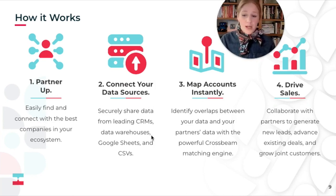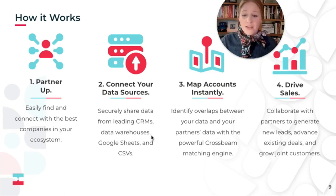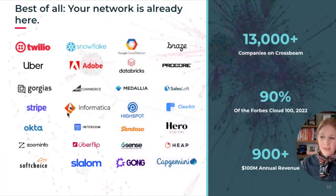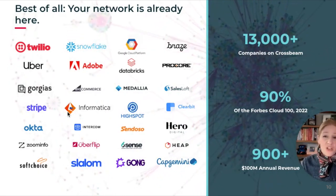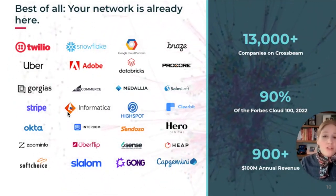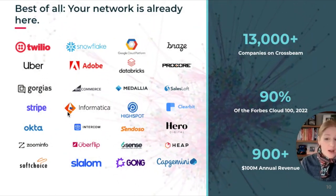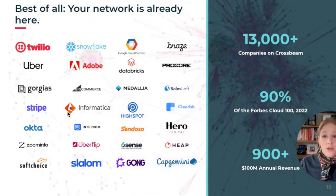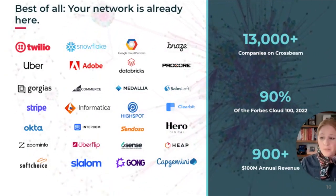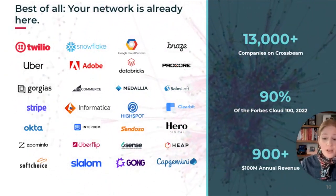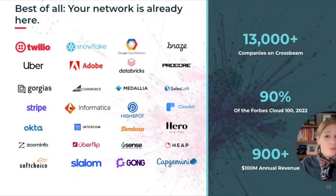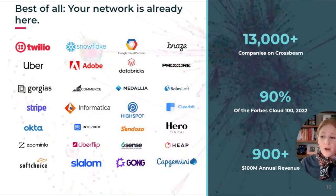You identify overlaps between your and your partner's data using Crossbeam's powerful matching engine. From there, you're driving sales — collaborating with partners to generate net new leads, advance existing deals, and grow joint customers. Best of all, your network is already on Crossbeam. We have over 13,000 companies on the platform with 90% of the Forbes 100 using and growing their ecosystem-led revenue, and over 100 million in annual revenue coming through with 900+ customers on the platform today.